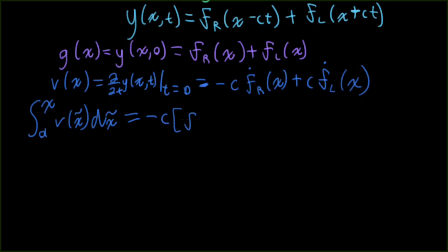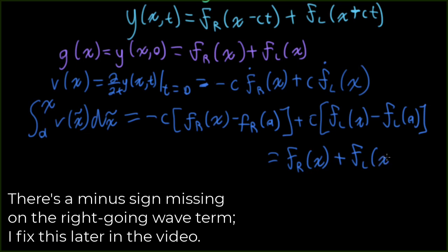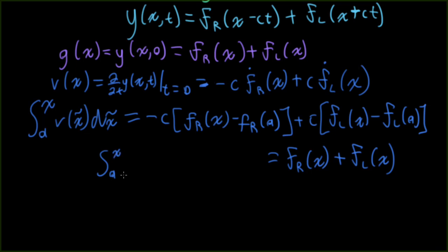So on the right, I'll have minus cfrx minus fr a. Most expositions leave out this a part, they leave it kind of magical, but I find it very confusing if I try to do that. So I'll write then plus cfl evaluated at x minus fl a.